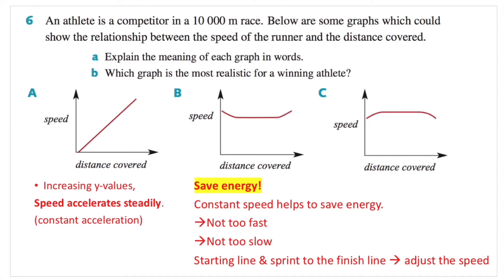For graph A, it's a linear relationship between distance covered and speed. As the y value — which is speed — increases, the speed is accelerating steadily, so it's a constant acceleration. But you probably don't want to do this in a 10,000 metre race. It's quite a long distance and you want to save energy. If you're constantly accelerating, you'll get pretty tired after a while. So maybe A is not the most realistic model.